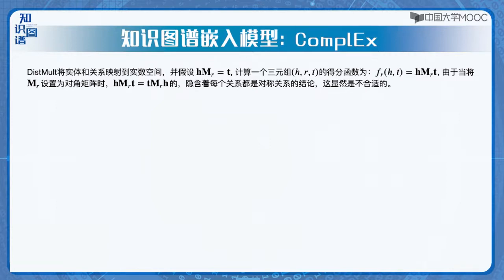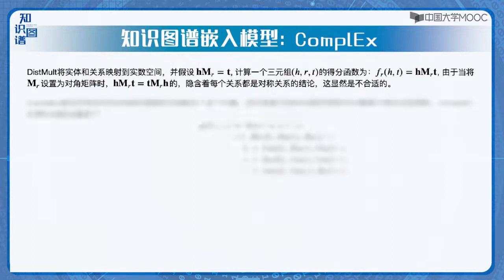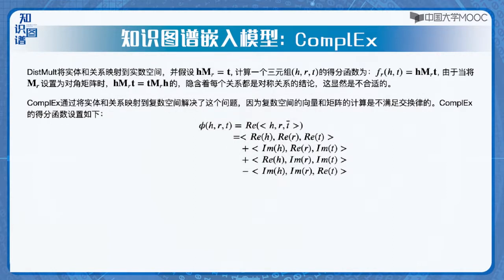DistMult将实体和关系映射到实数空间，并假设H乘以MR等于T。当将MR设置为对角矩阵时，我们发现H乘以MR乘以T等于T乘以MR乘以H，这就意味着每个关系都是对称关系，这显然是不合理的。ComplexE通过将实体和关系映射到复数空间解决这一问题，这是因为复数空间的向量和矩阵计算是不满足交换律的。